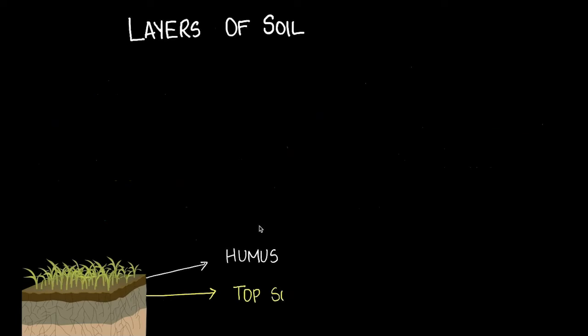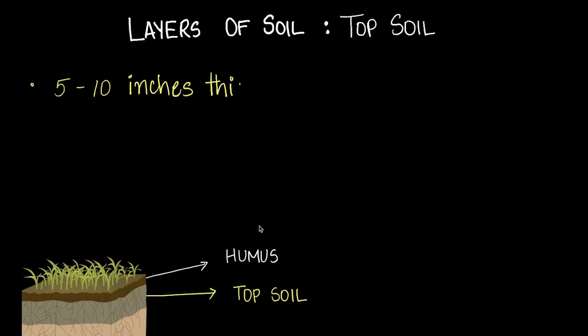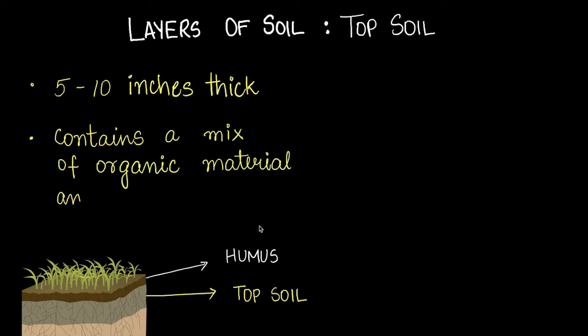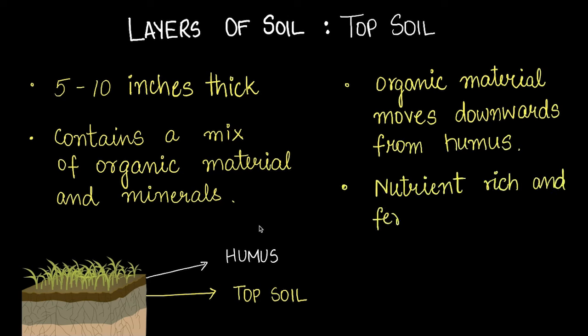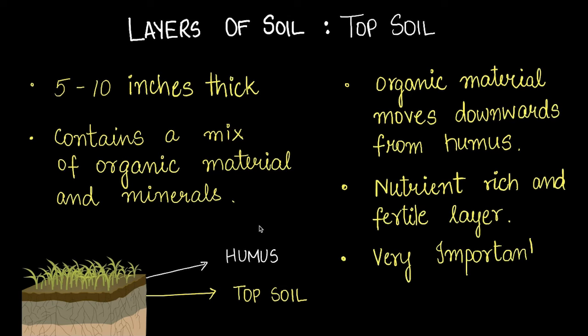The next layer is called topsoil. This layer is 5 to 10 inches thick and contains a mix of organic material and minerals. Organic material moves downward from the humus, making it a nutrient-rich, fertile layer. This is the layer that's very important for plant growth.